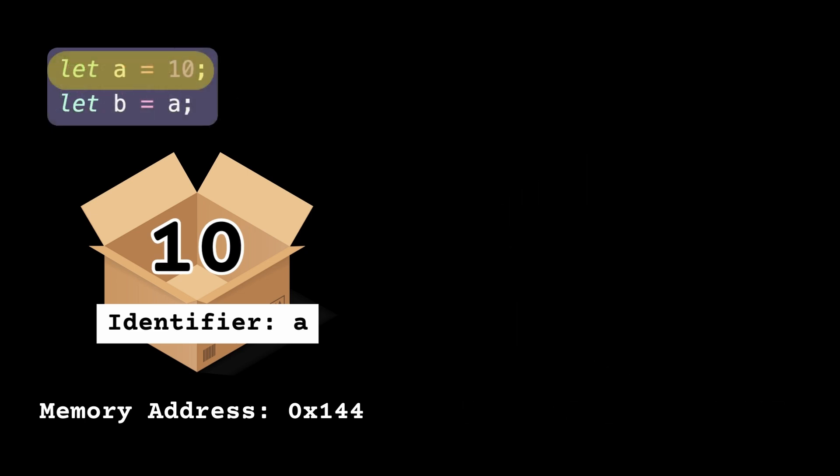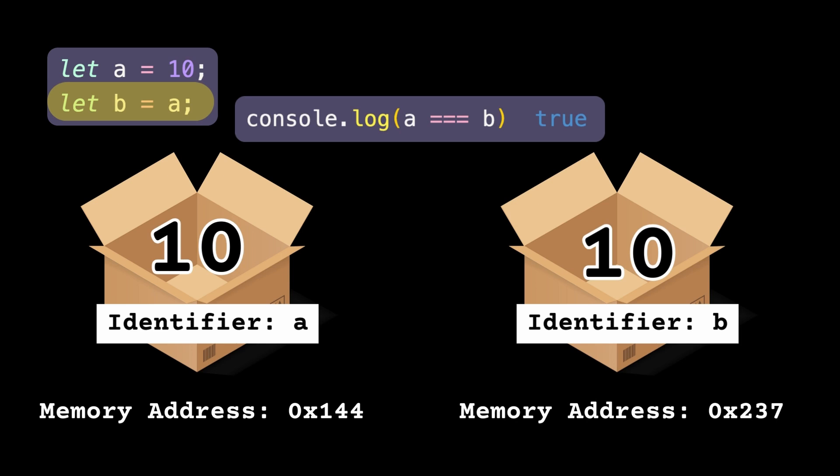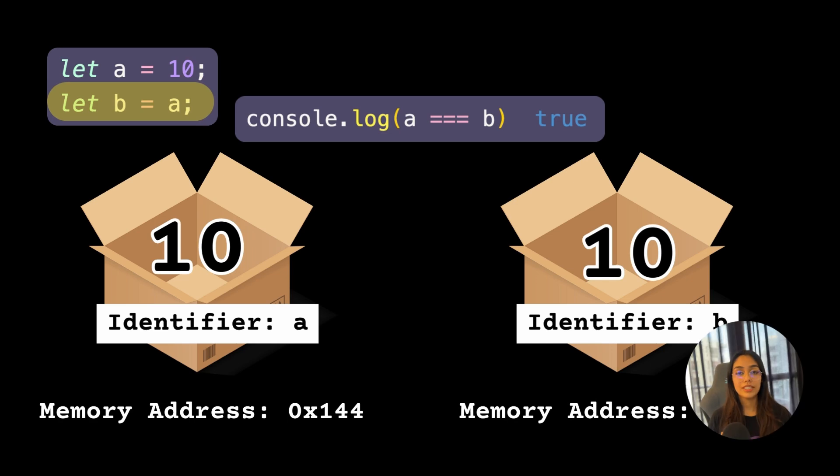Let's take another example: let a = 10, and for b, instead of directly assigning 10, I've used a to initialize it. For primitive data types, when you use another variable to assign a value, a copy is created. So let b = a — since a holds 10, a new memory address is allocated for b and a copy of the value is stored. Again, a and b exist at different locations but both hold 10, and a === b prints true. This behavior is known as pass by value.